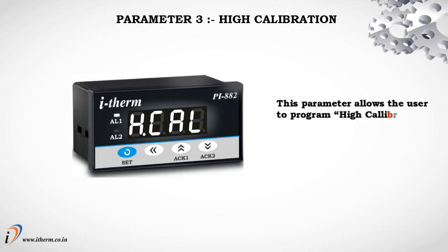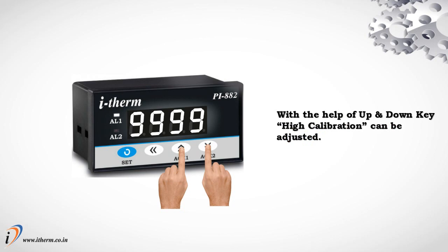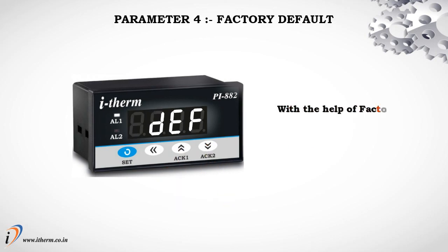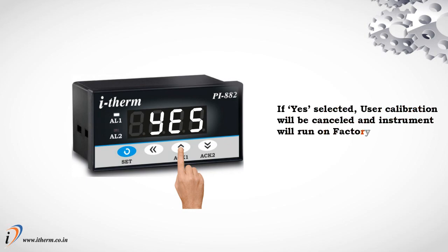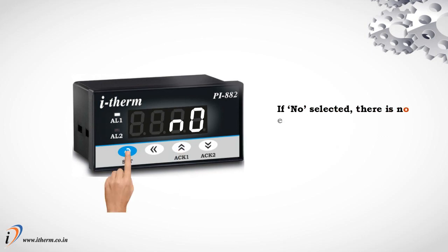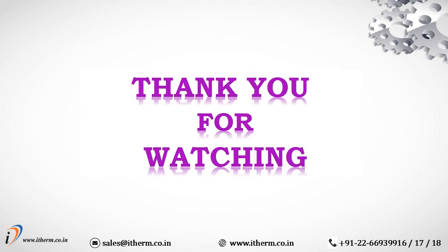Parameter 3: High Calibration. Parameter 4: Factory Default. With the help of the factory default parameter, the user can cancel user calibration and factory calibration will be loaded. If Yes is selected, user calibration will be cancelled and the instrument will run on factory-set calibration values. If No is selected, there is no effect on user calibration and the instrument will run as per user-defined calibration values. Run mode. Thank you for watching.